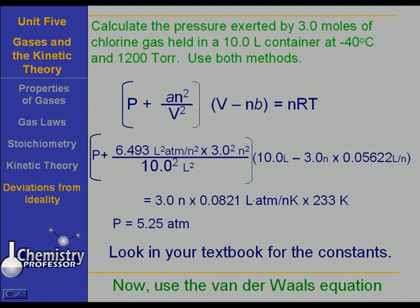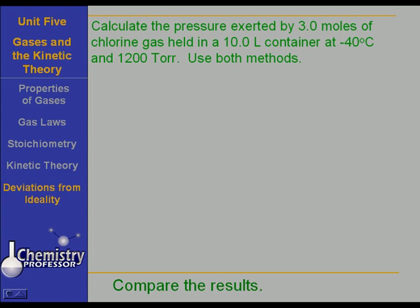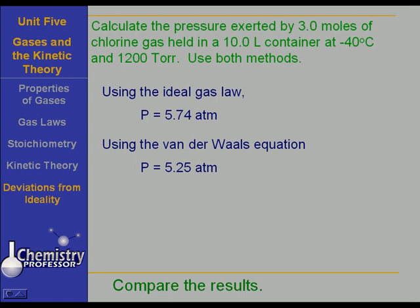Now, let's compare the two results. Using the ideal gas law, we came out that the pressure was 5.74 atmospheres. But in reality, the van der Waals equation tells us that the pressure is actually 5.25 atmospheres. And that is a significant difference. And it is due to the two factors we mentioned: the attractive forces of the gas molecules for one another and the actual volume that is occupied by the gas molecules themselves.